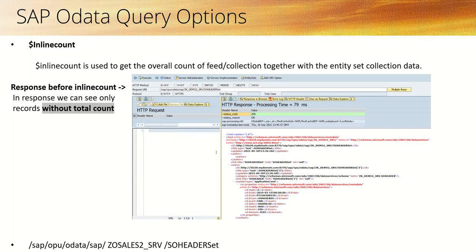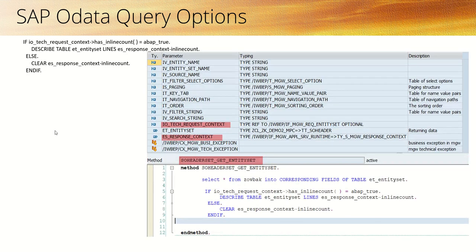Let's look at another query option: $inlinecount. $inlinecount is used to get the overall count within entity sets. For example, suppose we have implemented an entity set but have not implemented the code logic for $inlinecount. Without it, we get the records in the output but cannot see the total number of records. If you want to know how many records are in that entity set along with the data, you can make use of $inlinecount.